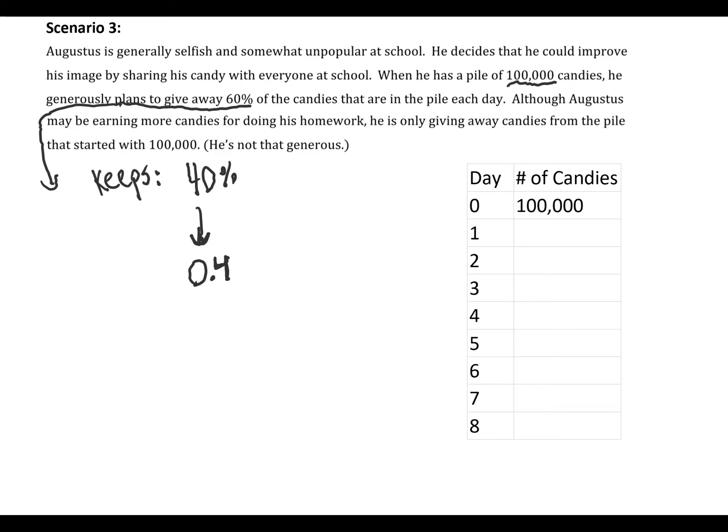And so we can write a recursive rule to model this situation, and that recursive rule is going to be X_n = X_(n-1) × 0.4, starting from X_0 = 100,000. And so that's our recursive rule to model this situation.